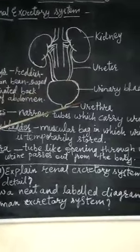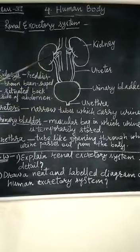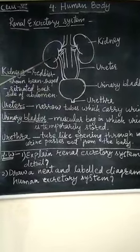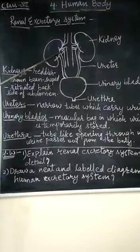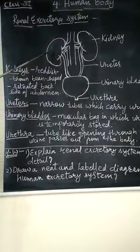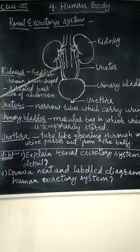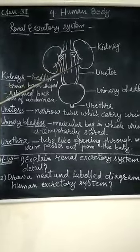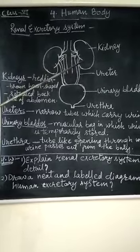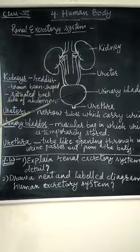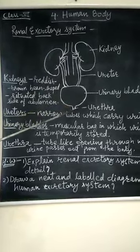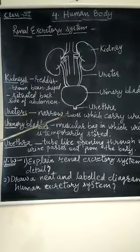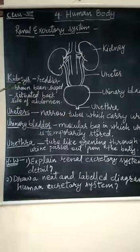Now let's see the diagram of the renal excretory system. As I said, it consists of 2 kidneys, 1 ureter, 1 urinary bladder, and urethra.